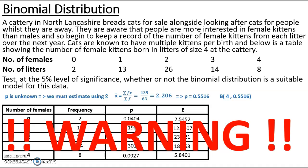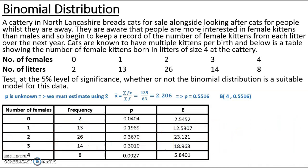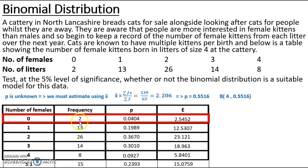Straight away a warning sign should flash: the expected value for 0 females is less than 5. We cannot use a chi-squared goodness of fit test if any expected value is less than 5, so we need to combine suitable categories. Since only the 0-females category is below 5, I combine it with the next category to create a '0 to 1 females' group. This gives a combined observed frequency of 15, combined probability of 0.2393, and combined expected value of 15.0759. All expected values are now greater than 5.